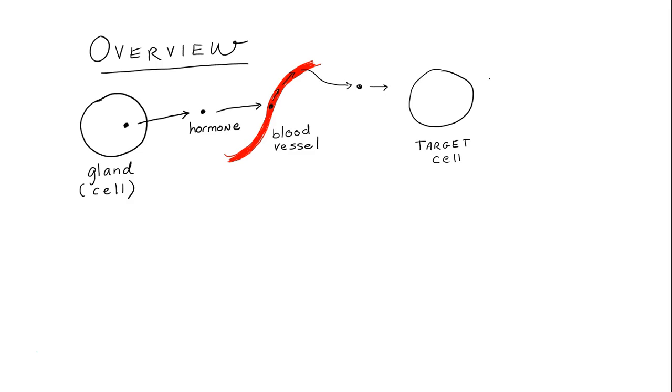And so by the hormone's actions on the target cell, it maintains homeostasis. Homeostasis is the maintenance of a steady state in the body, maintenance of a stable state.